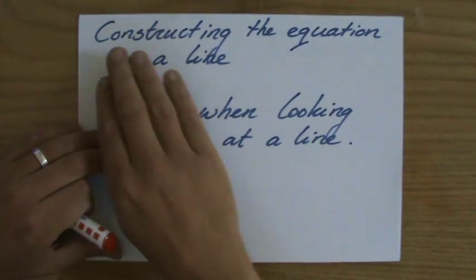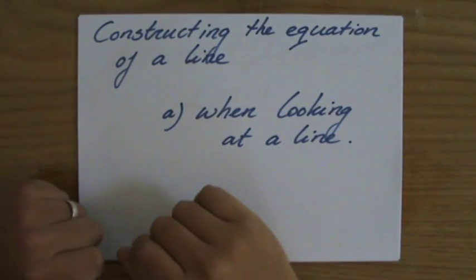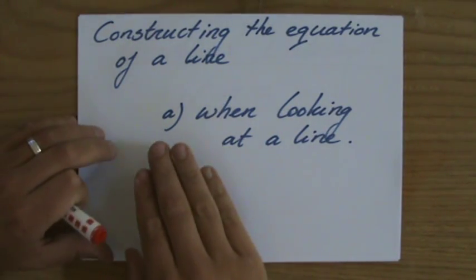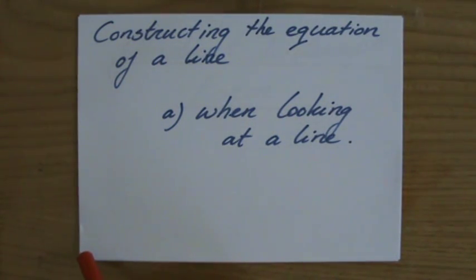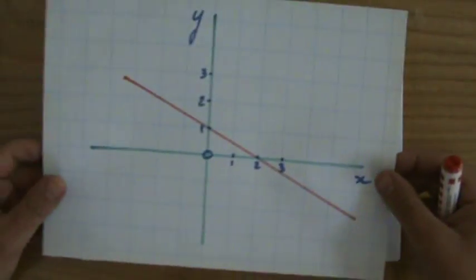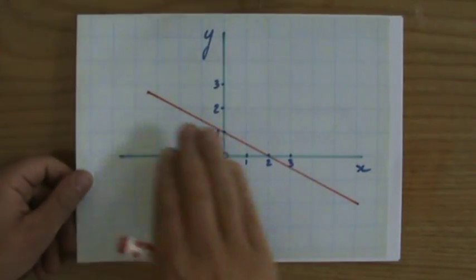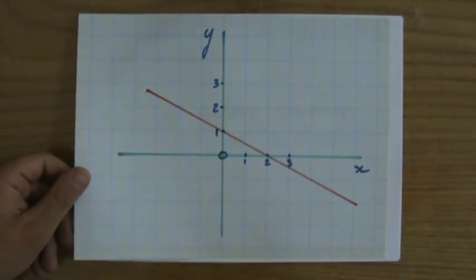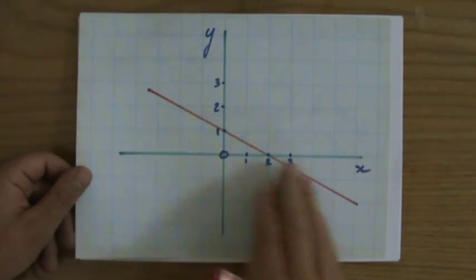Good morning. They're asking me to construct the equation of a particular line, and they're going to give me the line itself. So they're going to give me a set of axes and a line, and I have to construct the equation that describes this line.